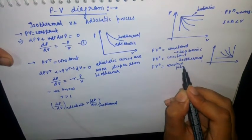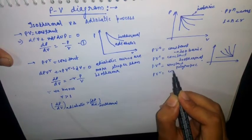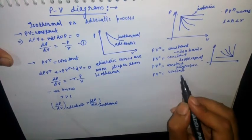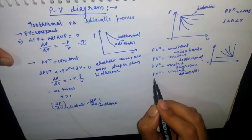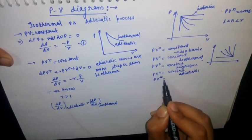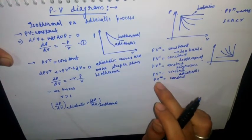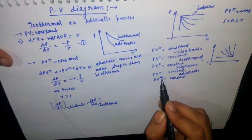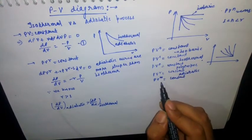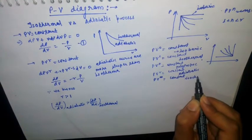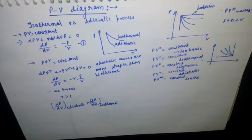PV^γ = constant is nothing but the adiabatic process. And PV^∞ = constant — if we put infinite as the exponent, the volume term becomes very large, effectively remaining constant — so this represents the isochoric process. This is a trick; it is not exact theory, but it is useful for remembering all the curves and drawing the PV diagram efficiently.